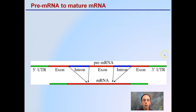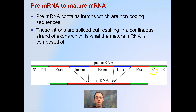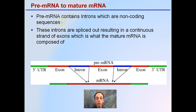There are actually two different subtypes of messenger RNA: pre-mRNA going to mature mRNA. Don't confuse the M in mature mRNA — this mRNA still stands for messenger RNA. So there's pre-messenger RNA to mature messenger RNA. Pre-RNA contains introns, which are non-coding sequences. There are regions of the pre-RNA that don't encode for anything. These introns are spliced out or removed, resulting in a continuous strand of exons, which is what the mature mRNA is composed of.